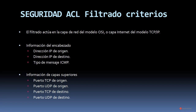Existen varios criterios para el filtrado que lleva a cabo una ACL. El filtrado actúa en la capa de red del modelo OSI o en la capa de internet del modelo TCP/IP. La información que utiliza es del encabezado: dirección IP de origen, dirección IP de destino y tipo de mensaje ICMP. Y de capas superiores, en el caso de las ACL extendidas, también puede utilizar el puerto TCP de origen, puerto UDP de origen, puerto TCP de destino o puerto UDP de destino.